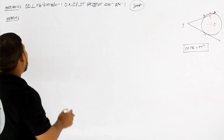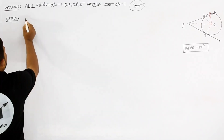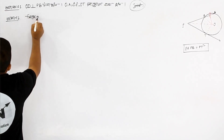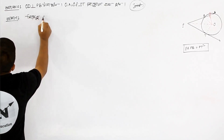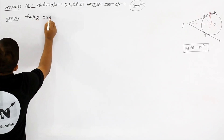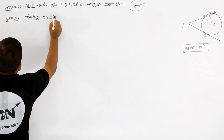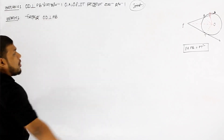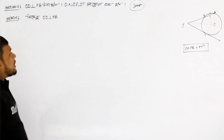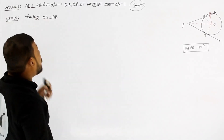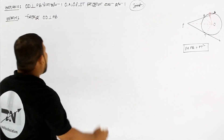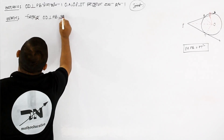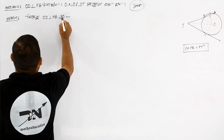Since O D is perpendicular to P B, by the property of the circle, since O D is perpendicular to A B.